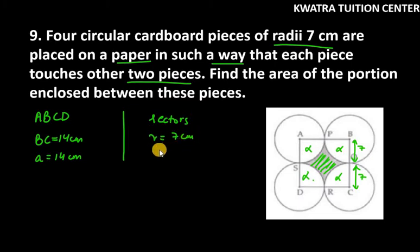We know that the radius is 7 cm. We know that theta is 90, because what type of sector is this? Quadrant type.